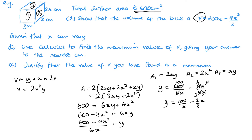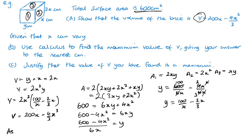Substituting into V = 2x²y, we get 2x² multiplied by (100/x − 2/3 x). Expanding gives 200x − 4/3 x³. This is the required result. This kind of start — proving a formula by combining a volume formula and a surface area constraint — is a very typical start to these exam questions, where you essentially have to combine two formulae.